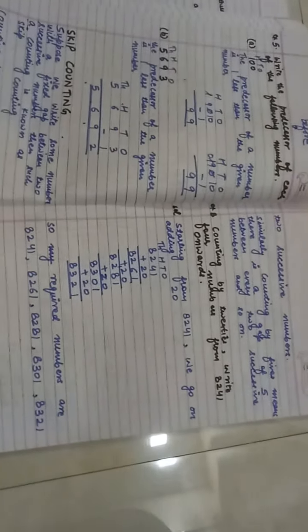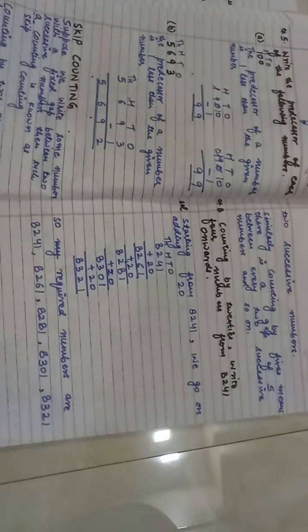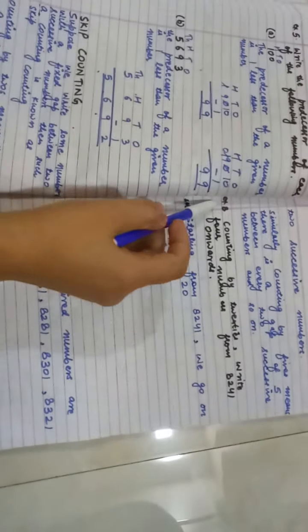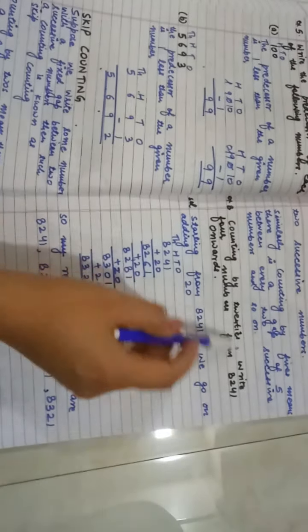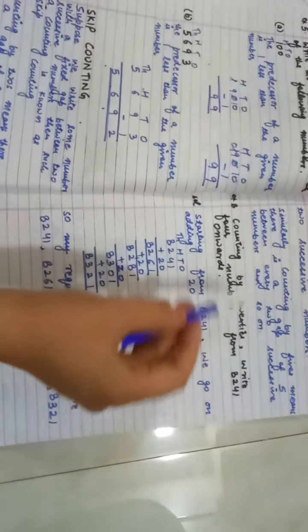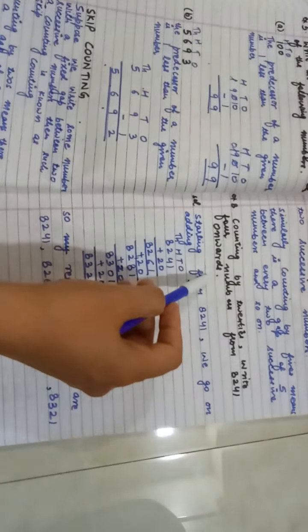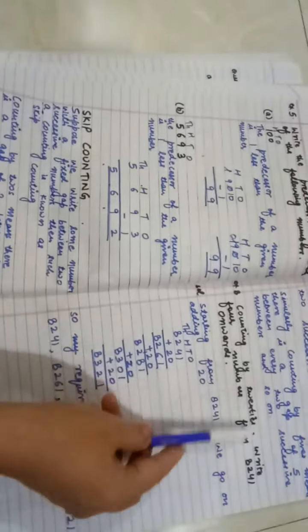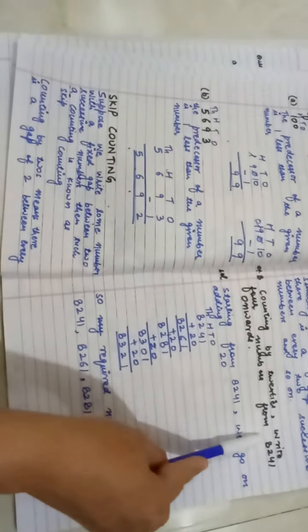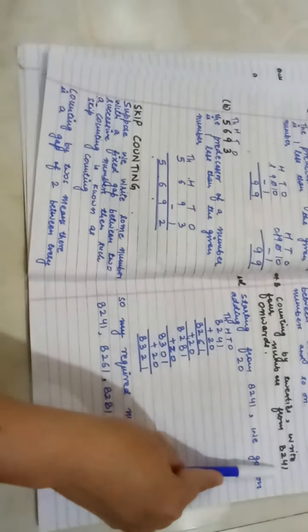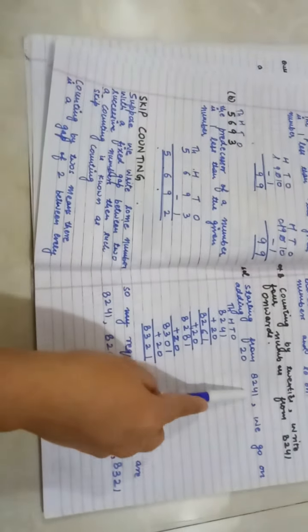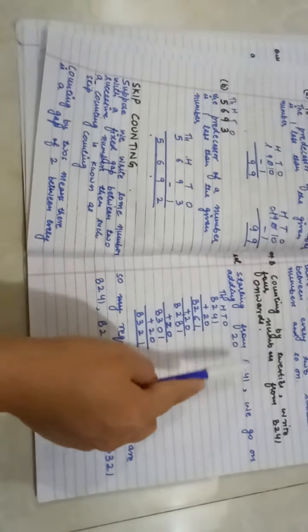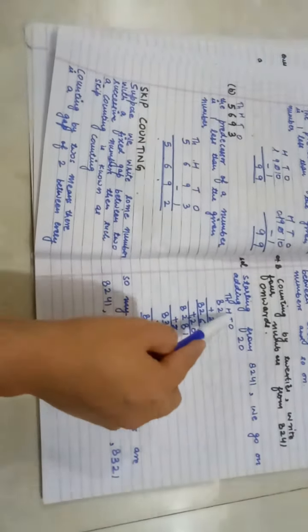There is one example which says counting by 20s — write 4 numbers from 8,241 onward. Counting by 20s means you have to add 20, and you have to write 4 numbers starting from 8,241. I will write 1s, 10s, 100, 1000 columns.